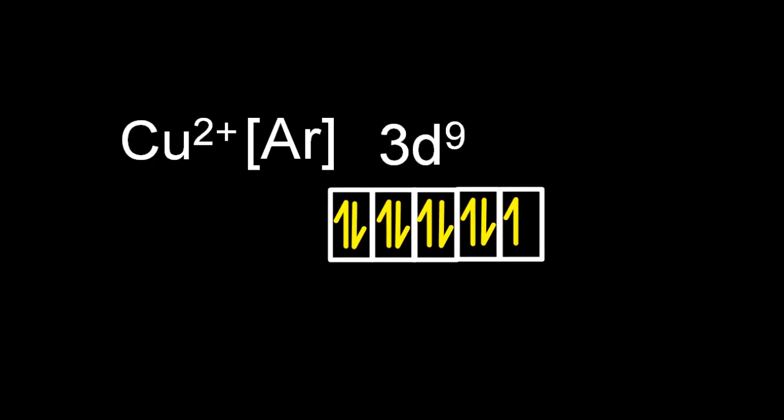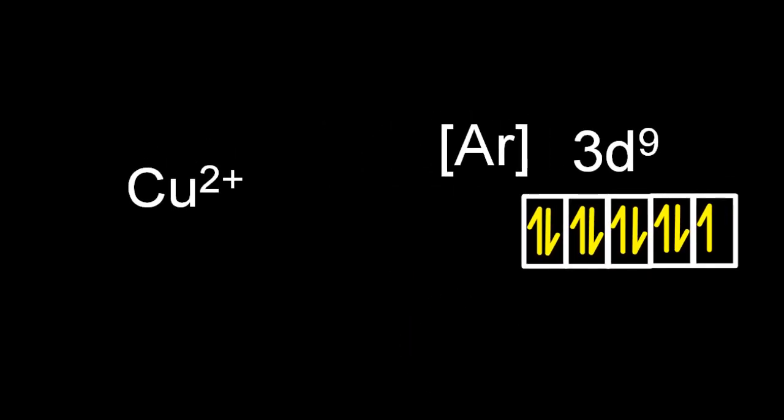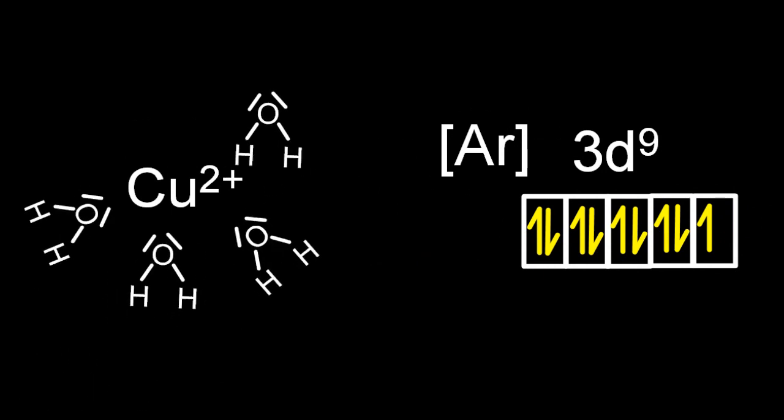So I'm going to bring the water ligands in again. Now I could use ammonia, I could use hydroxide, chloride, cyanide. All of these are different ligands that will split the d-orbitals in different ways and give different colours.